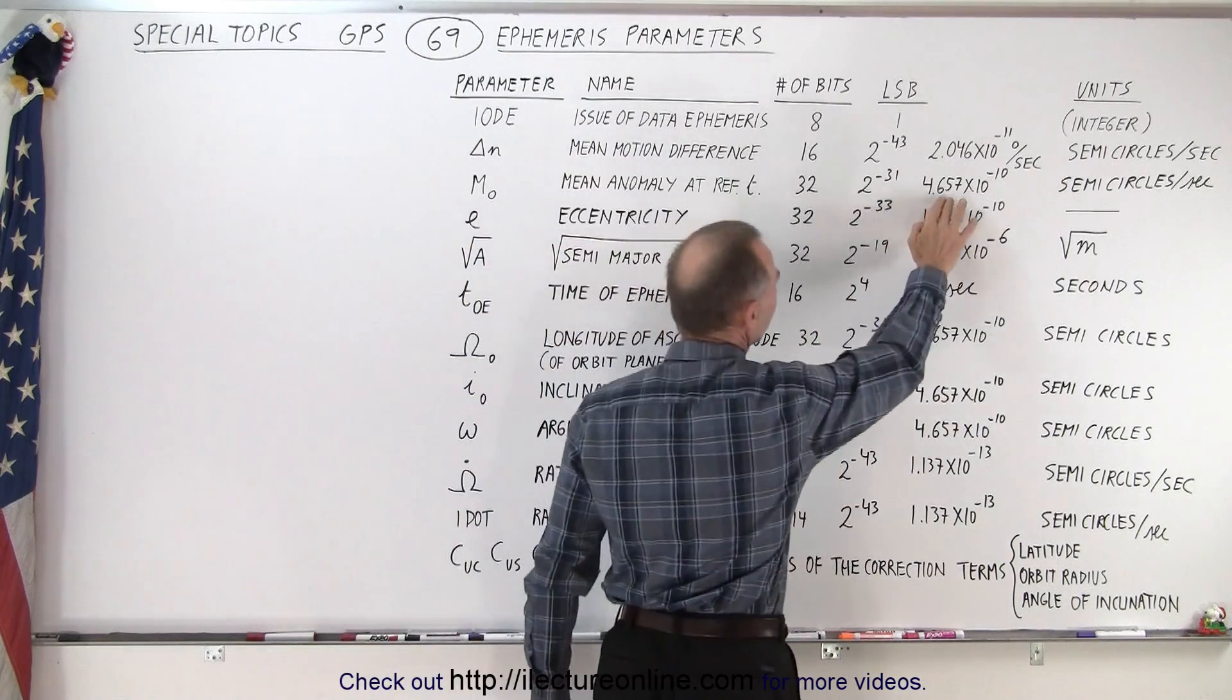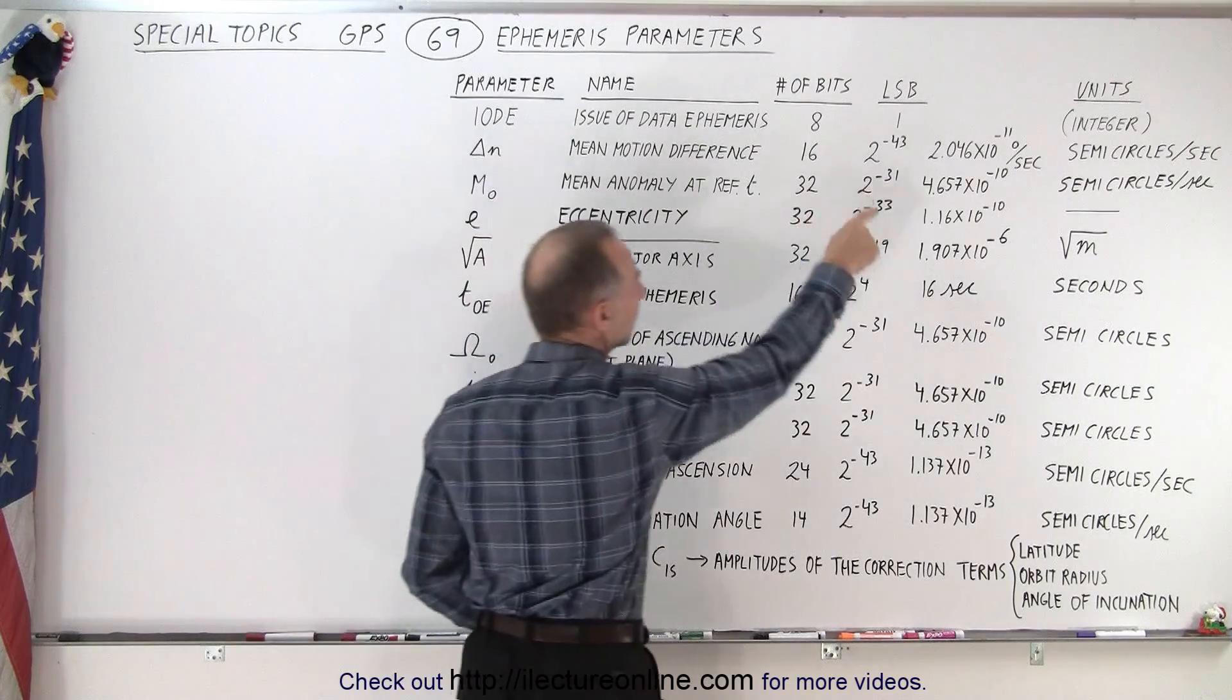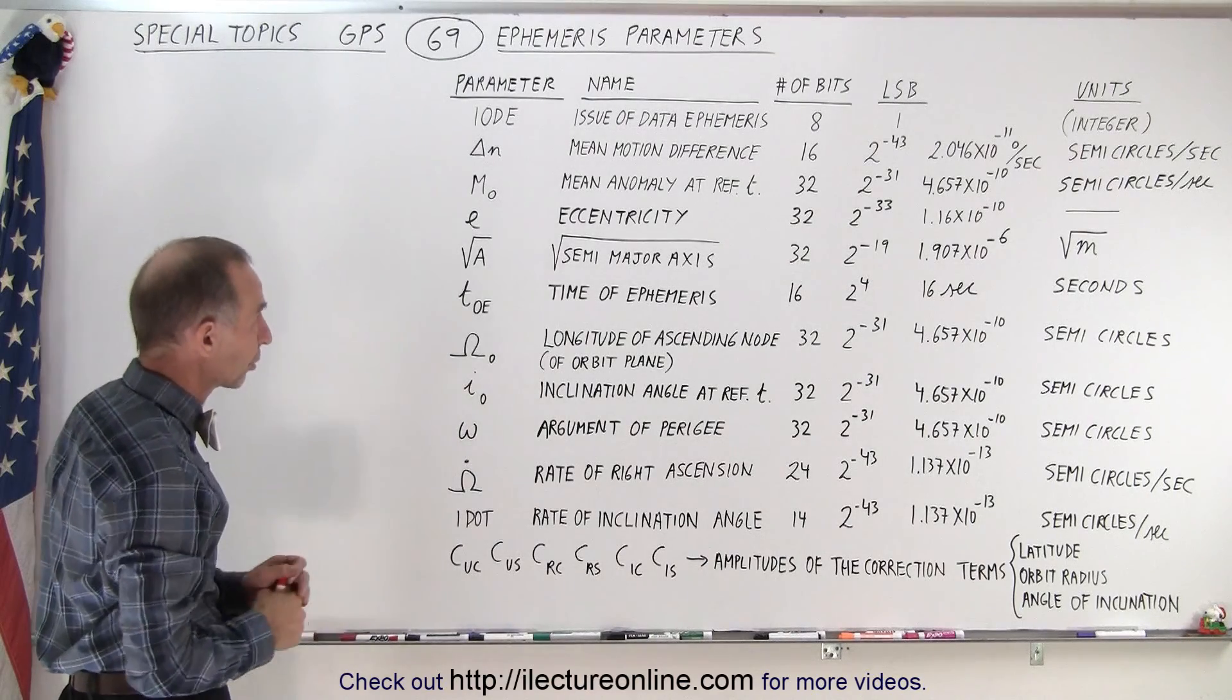But nevertheless the units we use there is semicircles per second or essentially half the total orbit around the earth. Again we're talking about very small units, 4.6 times 10 to the minus 10. You'll see this repeated where the units use semicircles per second or semicircles.